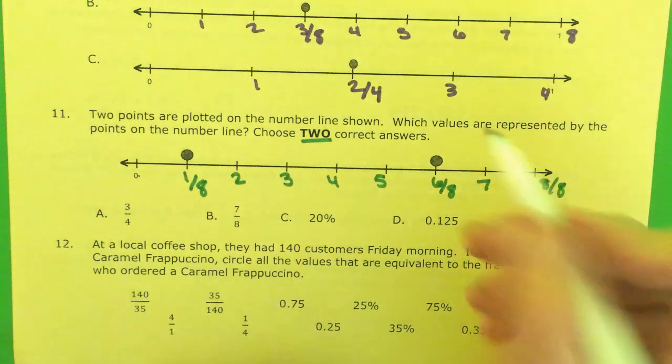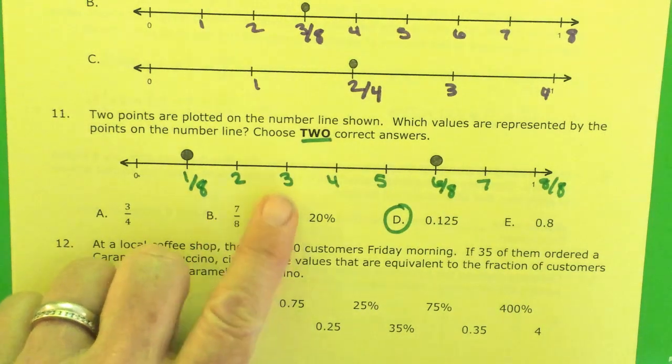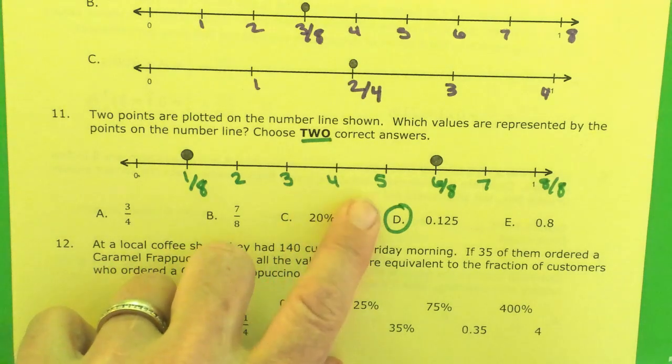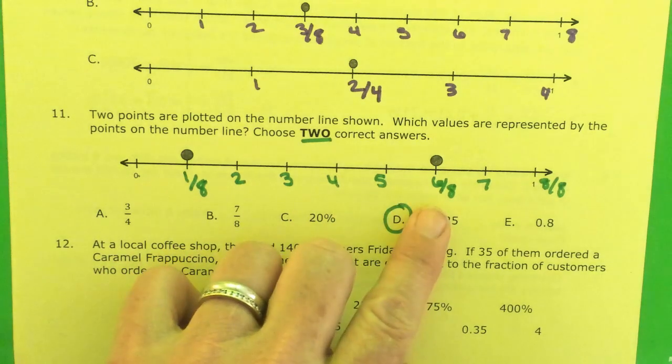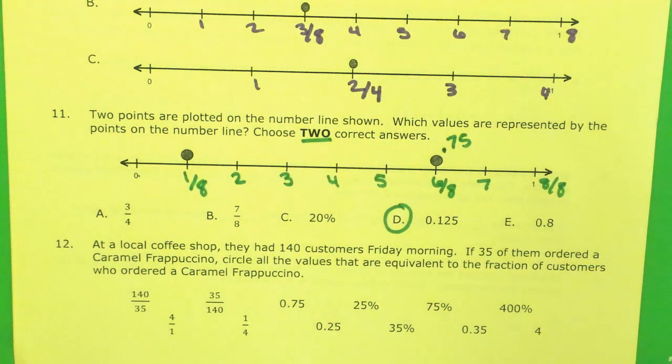1 eighths. There it is. 0.125. Then going up: 2 eighths 0.250, 3 eighths 0.375, 4 eighths 0.500, 5 eighths 0.625, 6 eighths 0.750. Or just 0.75.